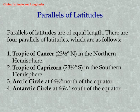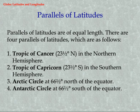The four parallels of latitudes are as follows: 1. Tropic of Cancer at 23 and a half degrees North in the Northern Hemisphere. 2. Tropic of Capricorn at 23 and a half degrees South in the Southern Hemisphere. 3. Arctic Circle at 66 and a half degrees North of the Equator. 4. Antarctic Circle at 66 and a half degrees South of the Equator.